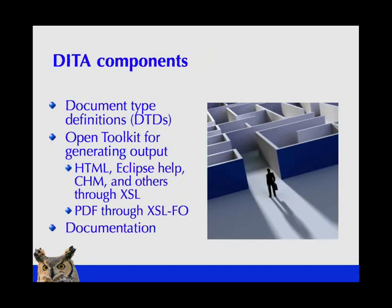DITA is made up of a number of pieces and parts. There are document-type definitions, or DTDs — the component that describes the structure. It says, for example, that if you have a task, a task must have a title, and it should have an introductory paragraph of some sort, and then steps somewhere in the task. The document-type definitions are where you describe the structure you're interested in enforcing, and DITA gives you those document-type definitions out of the box.